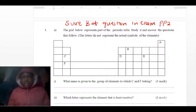The grid below represents part of a periodic table. Study it and answer the questions that follow. The letters do not represent the actual symbols of the elements.